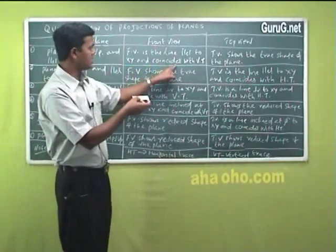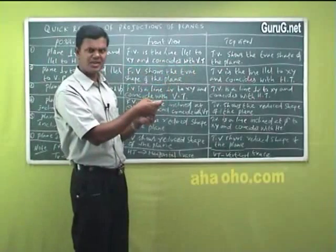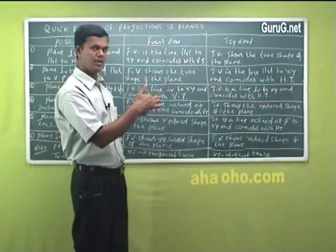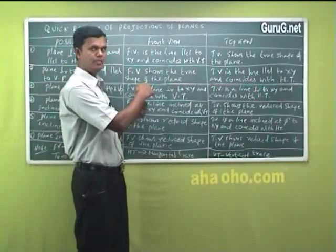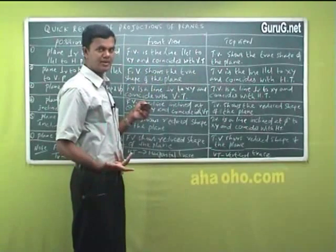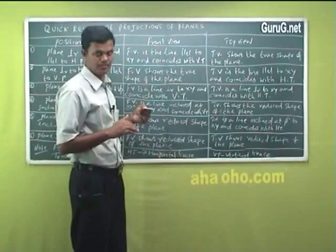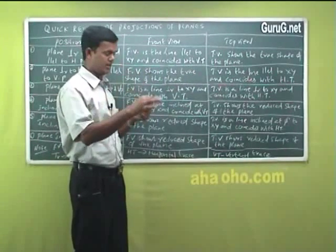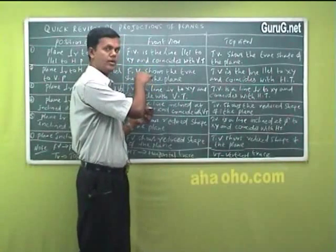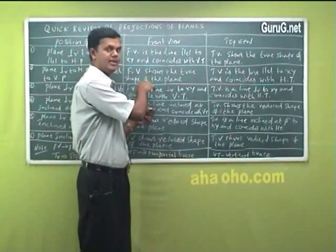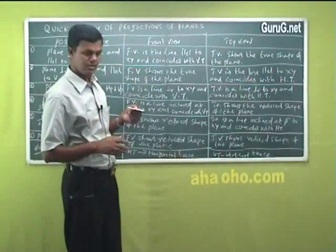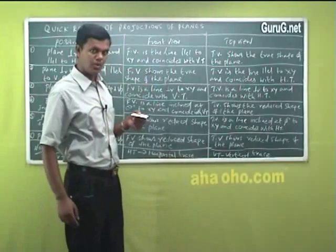This front view line coincides with the vertical trace. Vertical trace means: if you extend a line from a point, it should go and touch or hit the vertical plane — that becomes its vertical trace. If I have a line A-B and extend it, it will go and touch the vertical plane, so it becomes the vertical trace.